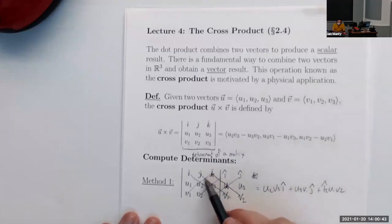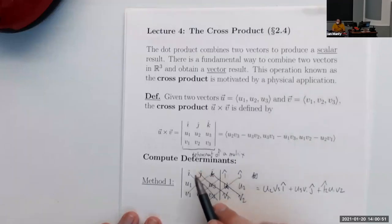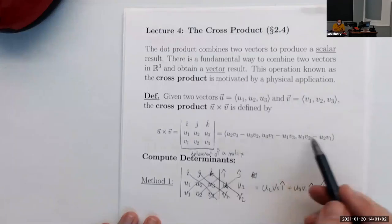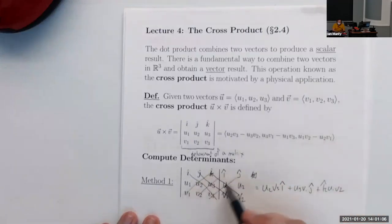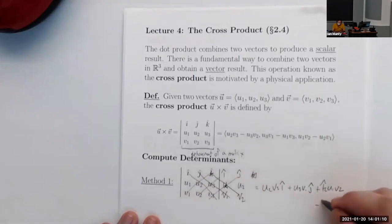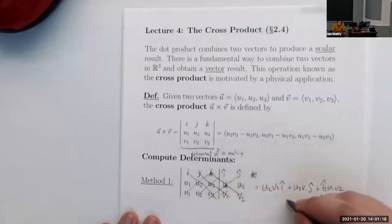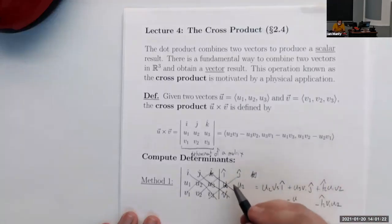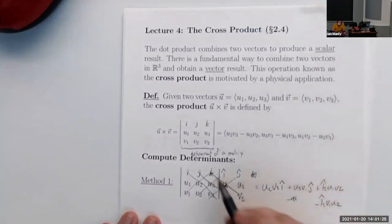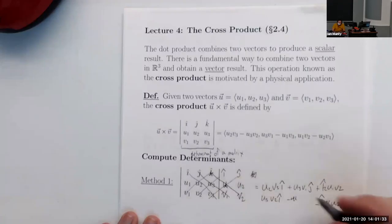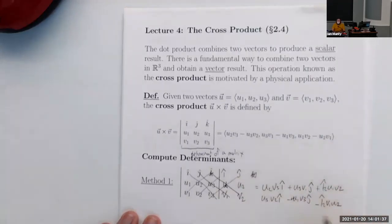If you look at the formula, you see some minus signs. Any time we go down and to the left along the backward diagonals, we subtract those products. So we subtract k̂·v1·u2, subtract î·u3·v2, and subtract ĵ·u1·v3. That's one way of computing the determinant — it has a nice geometric picture that makes it easier to remember.